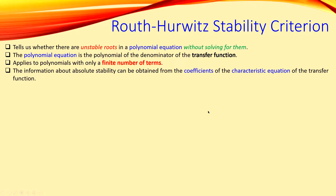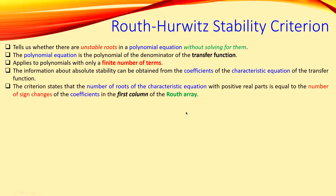It is required that you have the transfer function first. The criterion states that the number of roots of your characteristic equation with positive real part is equal to the number of sign changes of the coefficients in the first column of the Routh array. In short, the sign changes in the first column will determine your stability. This will be clear when we work out a numerical example.